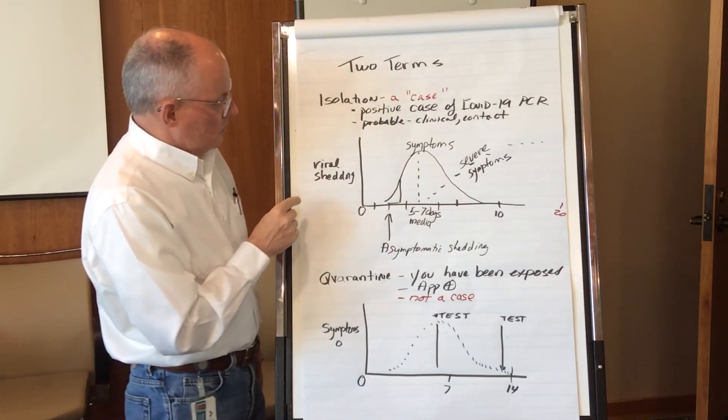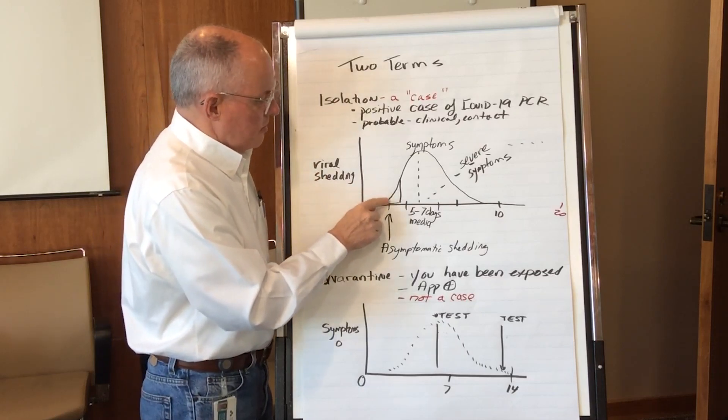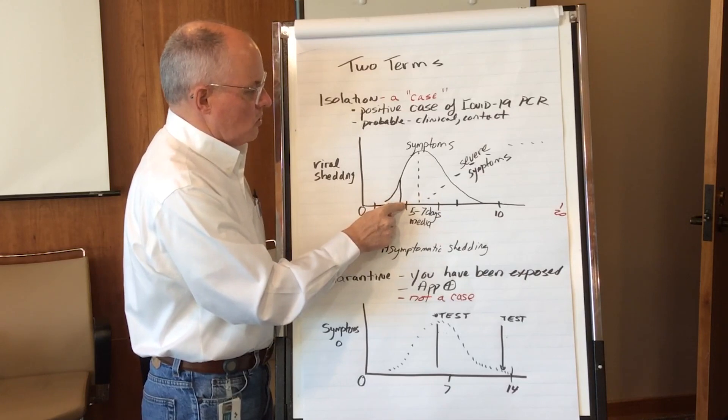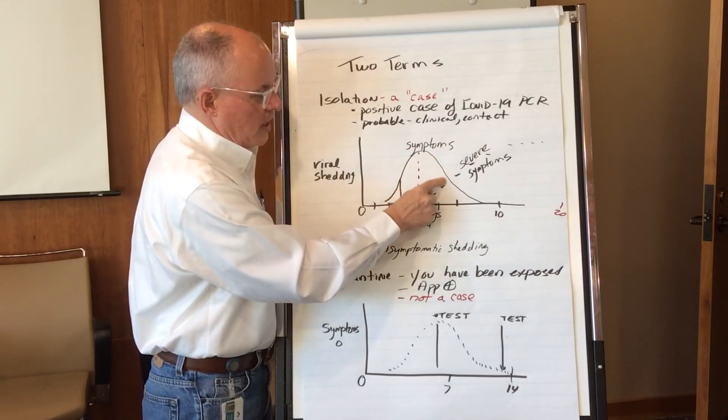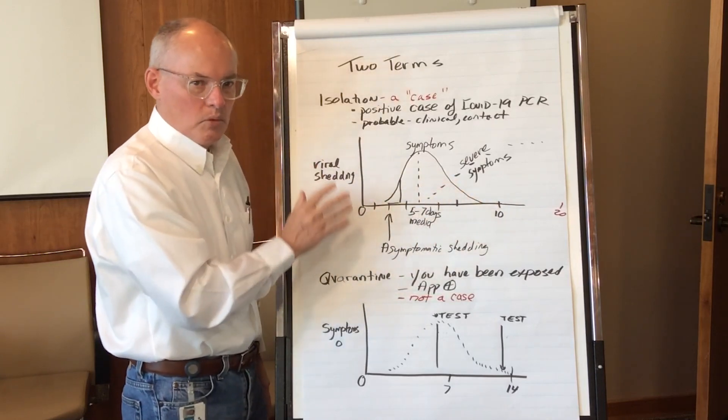For individuals who are asked to isolate, you typically develop your symptoms around day five to seven from your exposure date, and you're shedding virus during this period of time. But by day 10, you're no longer shedding virus if you're a normal host.